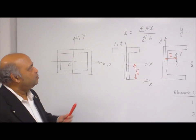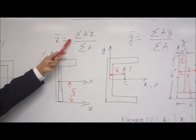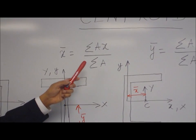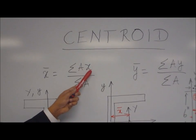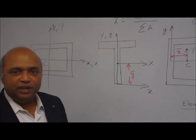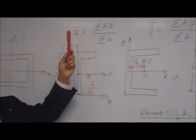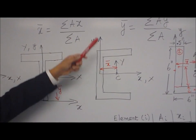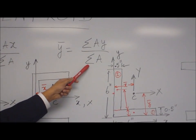If you look at the formula, you have x̄, the x-centroid, which is the sum of aᵢxᵢ divided by the sum of aᵢ. The numerator is area times distance, analogous to force times distance called moment. So it's also called area moment, and it's defined as first moment of area. Similarly, ȳ is the sum of aᵢyᵢ divided by the sum of aᵢ.